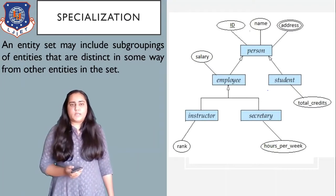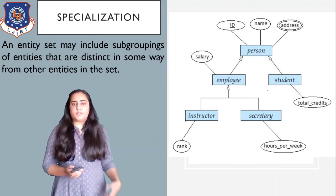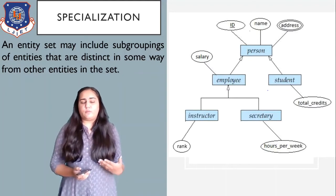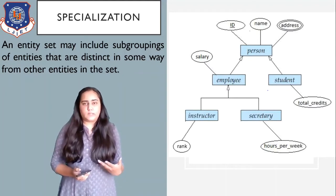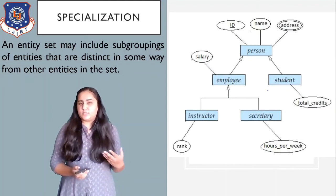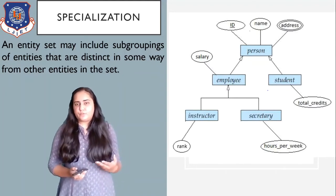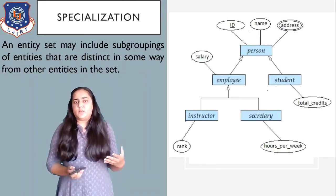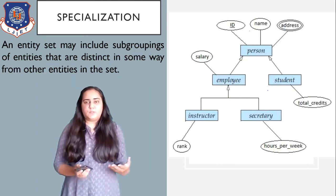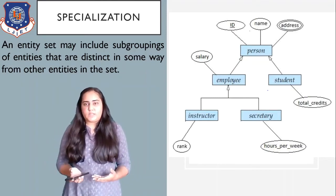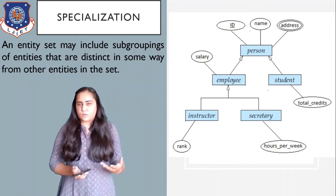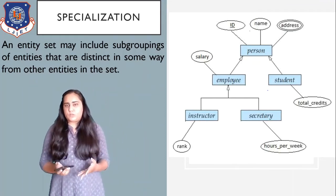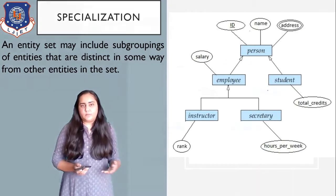An entity set may include subgroupings of entities that are distinct in some way from other entities in the set. This distinction is because of attributes — for example, an employee has a salary but a student does not, and a student has total credits but an employee does not.